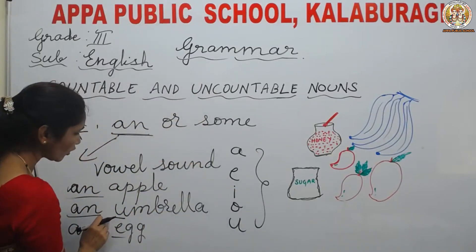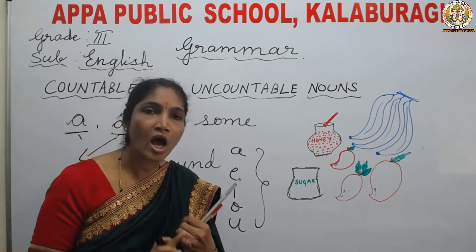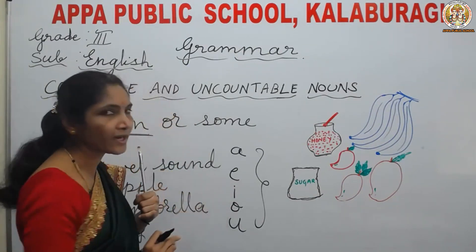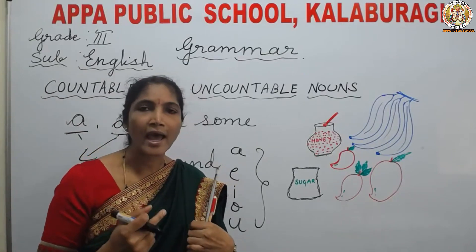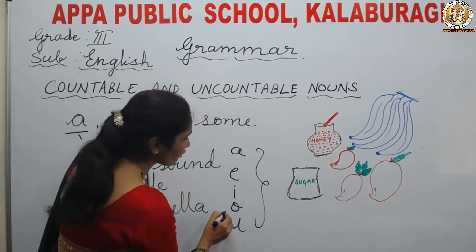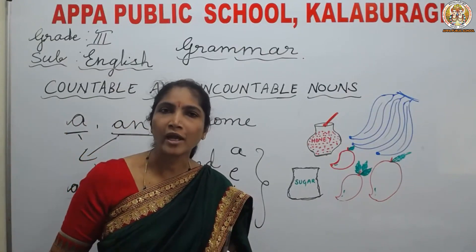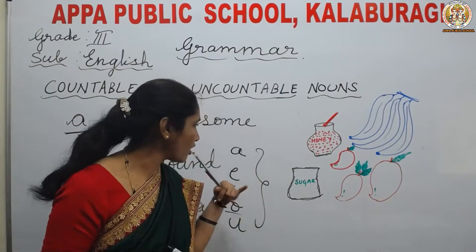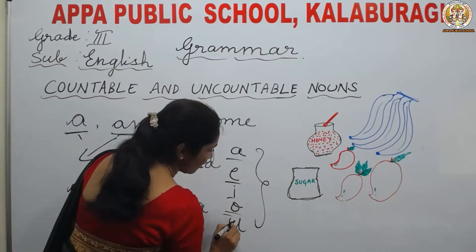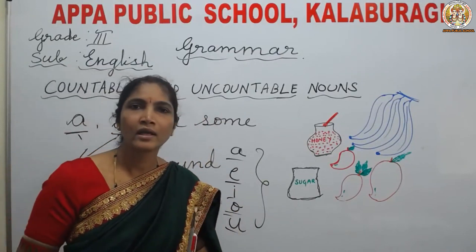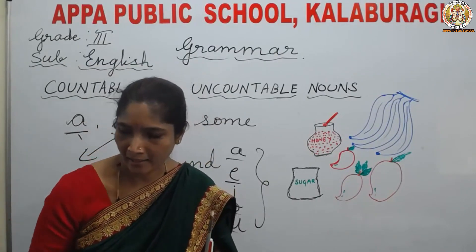Apple, umbrella, egg — A, U, E — these all are vowel sounds. For example, we have I here: an import. And for O, we can say an orange. In the same way, whichever countable noun is starting with a vowel sound, we have to use an before it.